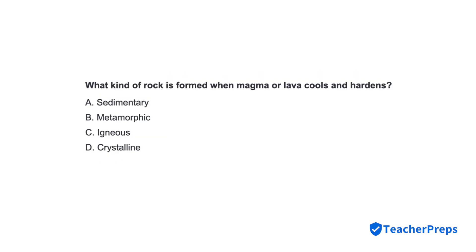What kind of rock is formed when magma or lava cools and hardens? Correct response: Letter C — igneous.